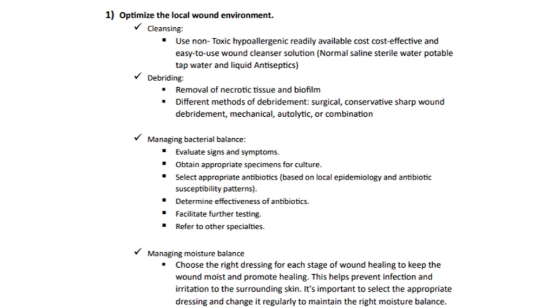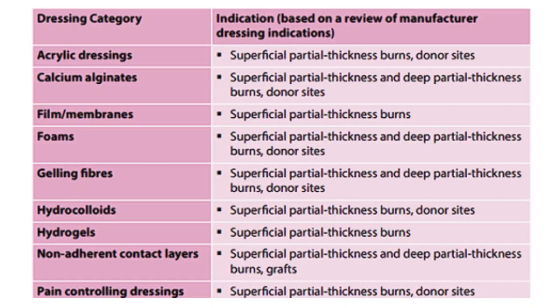We want to manage bacterial burden — evaluate for signs and symptoms using NERDS and STONEES criteria, and obtain appropriate specimen collection if required. Then we manage moisture balance by choosing the right dressing for each stage of wound healing to keep the wound just moist. A wound should be just as moist as our eyeball. Dressing categories include acrylics, alginates, films, foams, gelling fibers, hydrocolloids, and hydrogels — each used at different stages of healing.